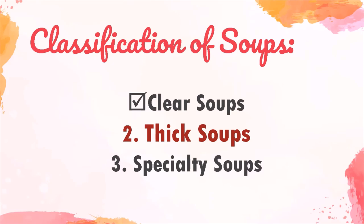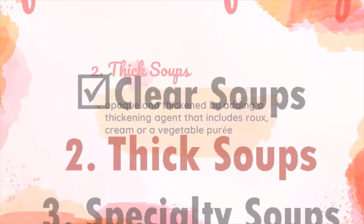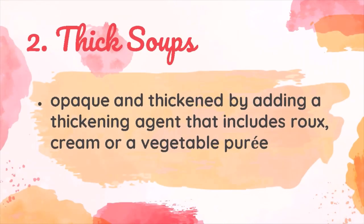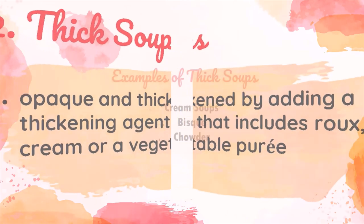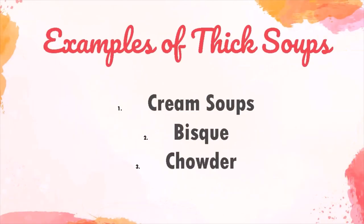The next classification of soups is thick soups. Thick soups are opaque and thickened by adding a thickening agent that includes roux, cream, or a vegetable puree. Examples of thick soups are cream soups, bisque, and chowder.